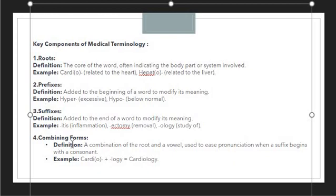The combining form is an additional element used as needed. It is a combination of the root and a vowel used to ease pronunciation when a suffix begins with a consonant. For example, in 'cardiology,' 'cardio' represents the heart, 'O' is the combining form, and '-ology' represents study of. So 'cardiology' means study of the heart. This is how a term is produced when combining prefix, root, suffix, and combining form.